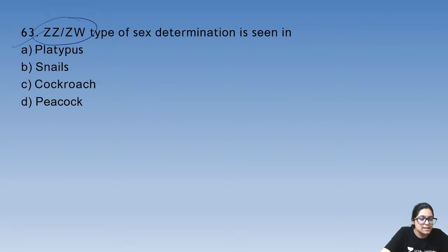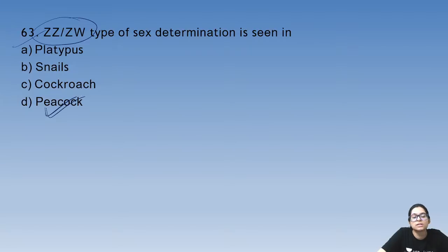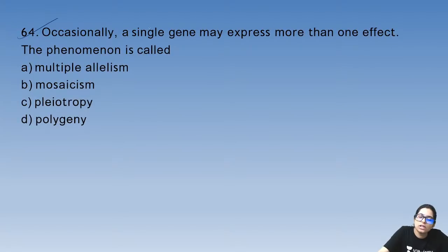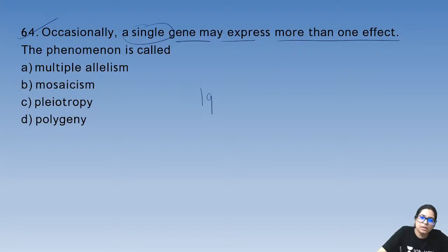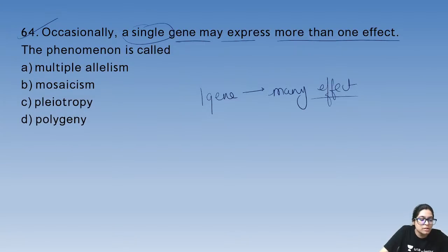Question 63: ZZ/ZW type of sex determination is seen in peacocks and birds. Question 64: when a single gene expresses more than one effect, this phenomenon is known as pleiotropy.